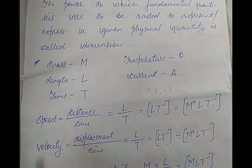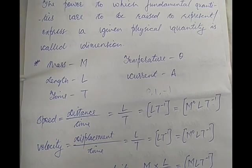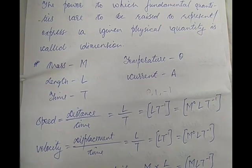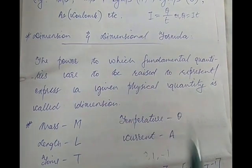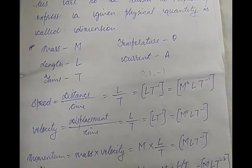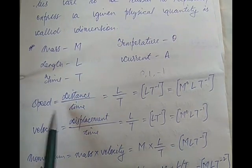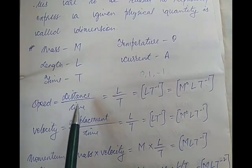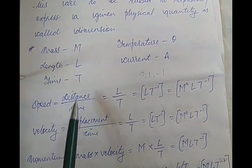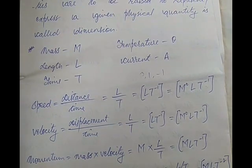The question would be like: find the dimension of speed, or find the dimensional formula of speed. Get one thing very clearly — in order to calculate the dimension or dimensional formula, you have to know the formula for that particular physical quantity. For example, the formula for speed is distance upon time. If you know this, you can easily calculate the dimension.